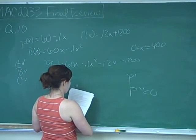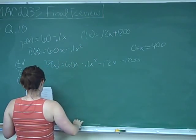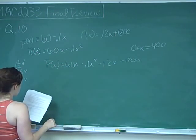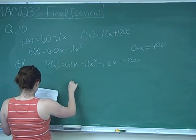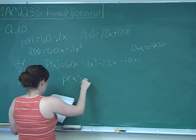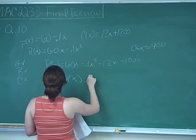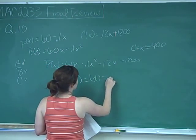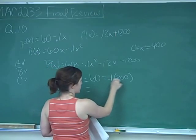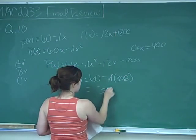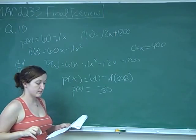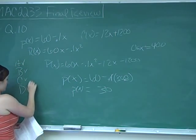Statement D says in order to sell 300 items, the price of the product must be $30. The demand function is P(X) = 60 - 0.1X. To sell 300 items, we plug in 300: 60 - 0.1(300) = 60 - 30 = 30. So the price does need to be $30, and statement D is true.